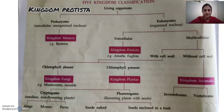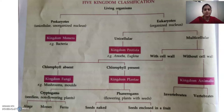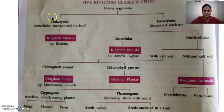Hi children. In the last class we discussed about classification and we started five kingdom classifications. The five kingdom classifications are kingdom Monera, kingdom Protista, kingdom Fungi, kingdom Plantae, and kingdom Animalia. In the last class we discussed about kingdom Monera.